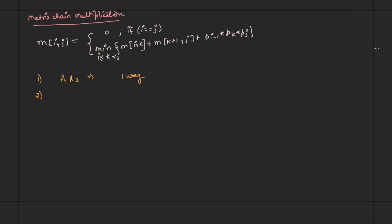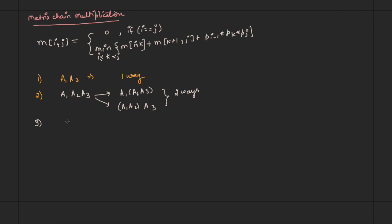If we have three matrices A1, A2, and A3, there are two ways of multiplying them. The first way is to multiply A1 with (A2·A3), and the second way is to multiply (A1·A2) with A3. So there are two ways of multiplying three matrices.